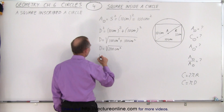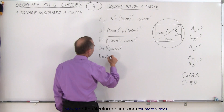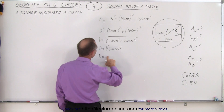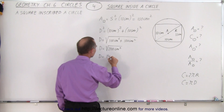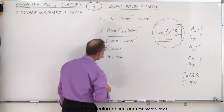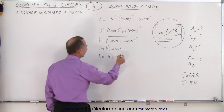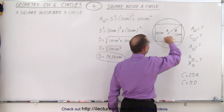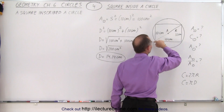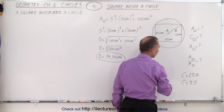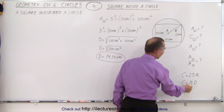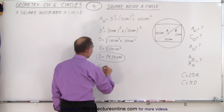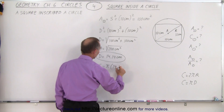The diameter equals 14.14 centimeters. So by using the Pythagorean theorem, drawing a line across the diagonal of the square gives us the diameter of the circle. We know the circumference is equal to π times the diameter, so to find the circumference we need the diameter, and now we can say that C equals π times 14.14 centimeters.